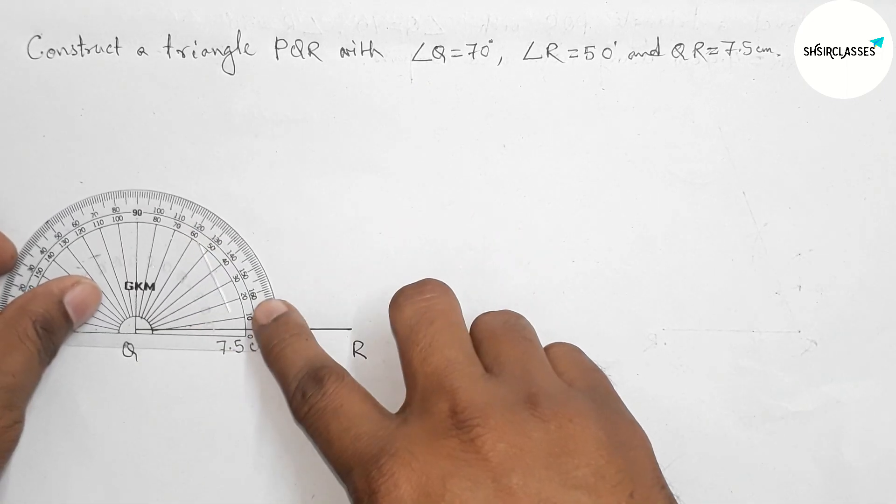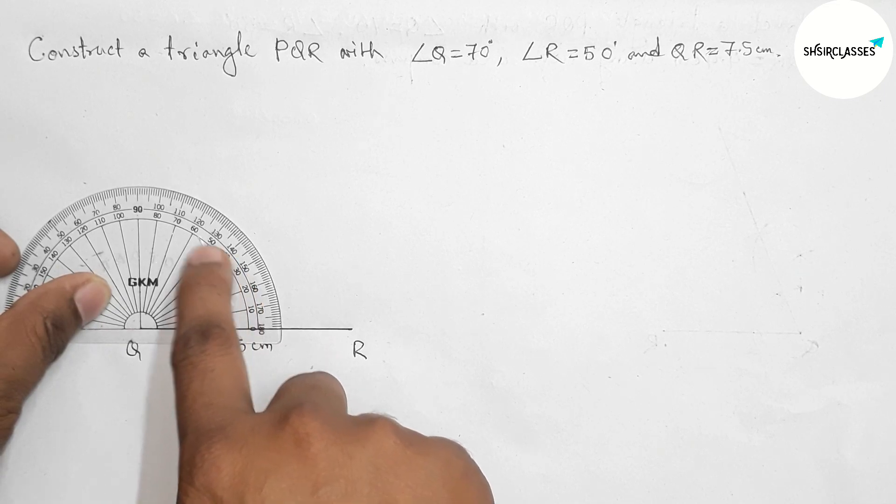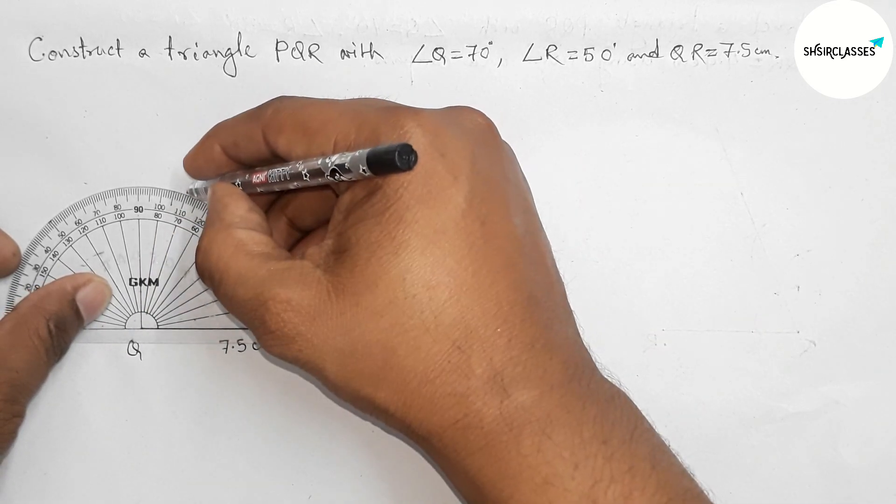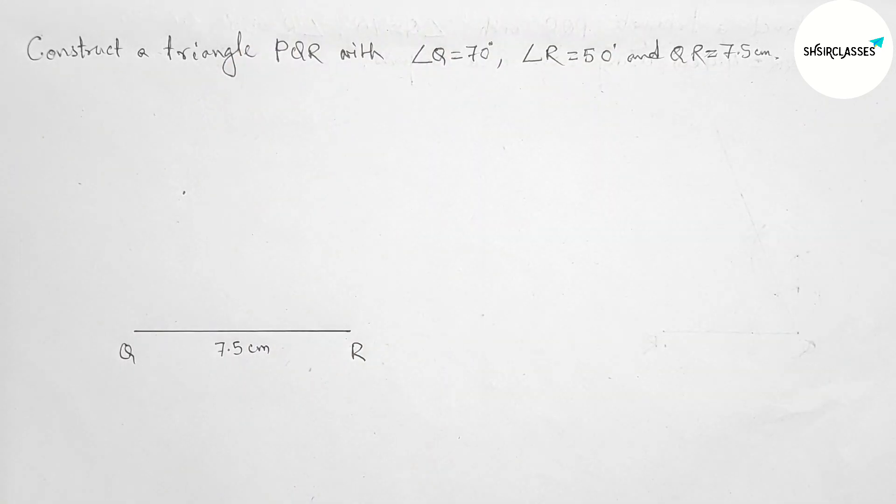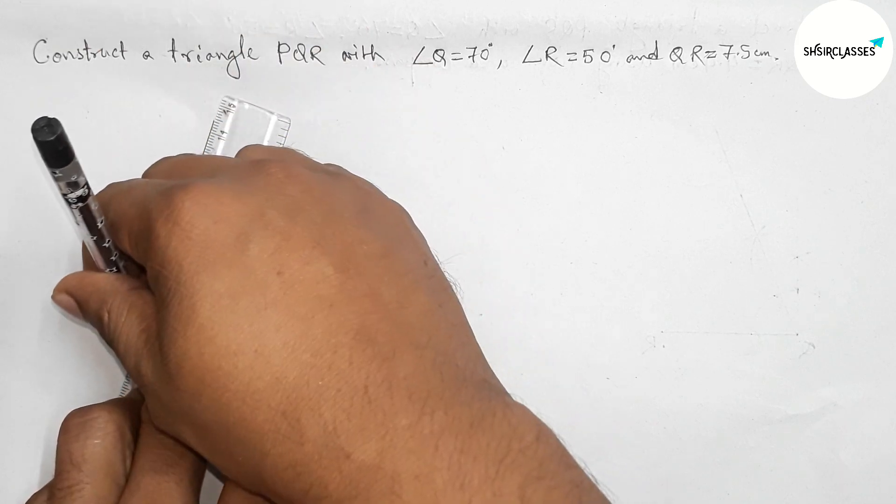With the help of a protractor on point Q, place the protractor on point Q and count 70 degrees. Here this is 70 degrees, so first mark here, then join this line to get 70 degrees.